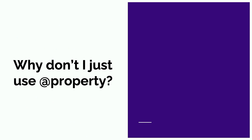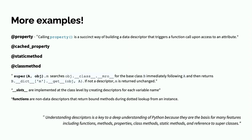Now you might ask, why don't I just use something like @property if I just want to replace an attribute with a function? Well, how do you think @property is implemented? It's implemented using descriptors. And it's not just @property — cache_property obviously, static method and class method are both implemented by descriptors. Super uses descriptors. Slots uses descriptors, if you ever use that. And even functions in Python are actually descriptors themselves.